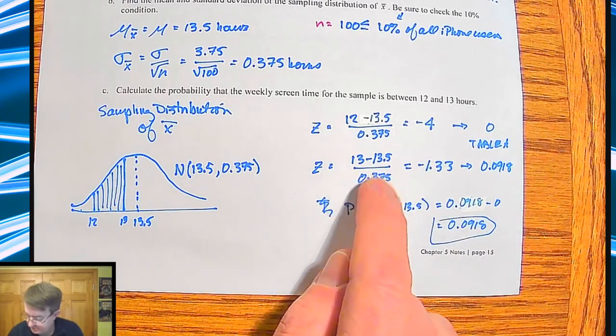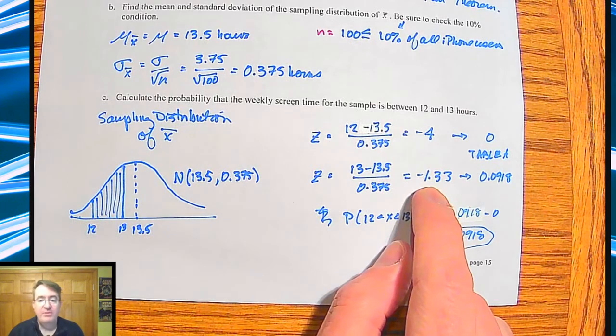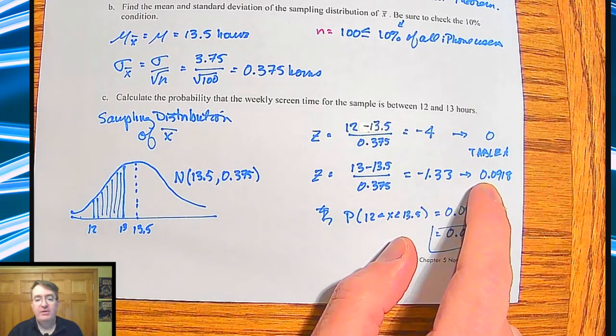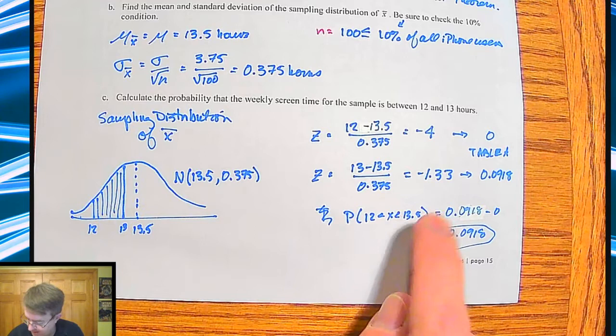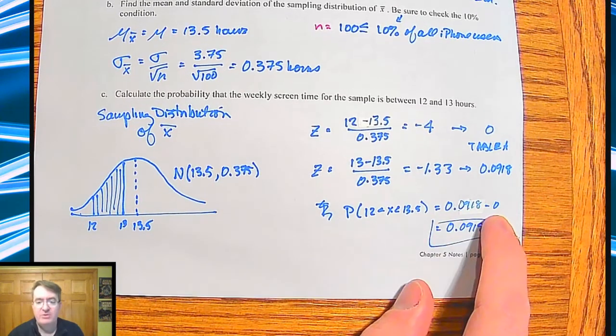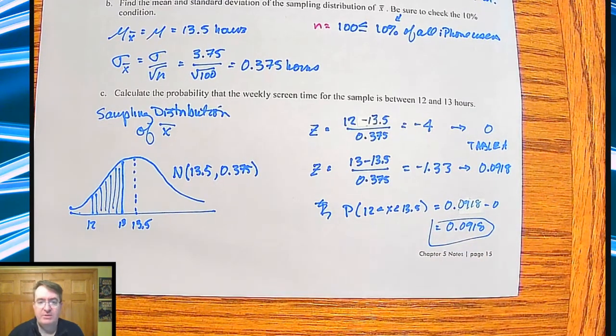We're also going to do 13. We get a z-score of negative 1.33. That gives us a proportion of 0.0918. So the probability that it falls between 12 and 13 hours, we subtract those two numbers, and we get 0.0918.